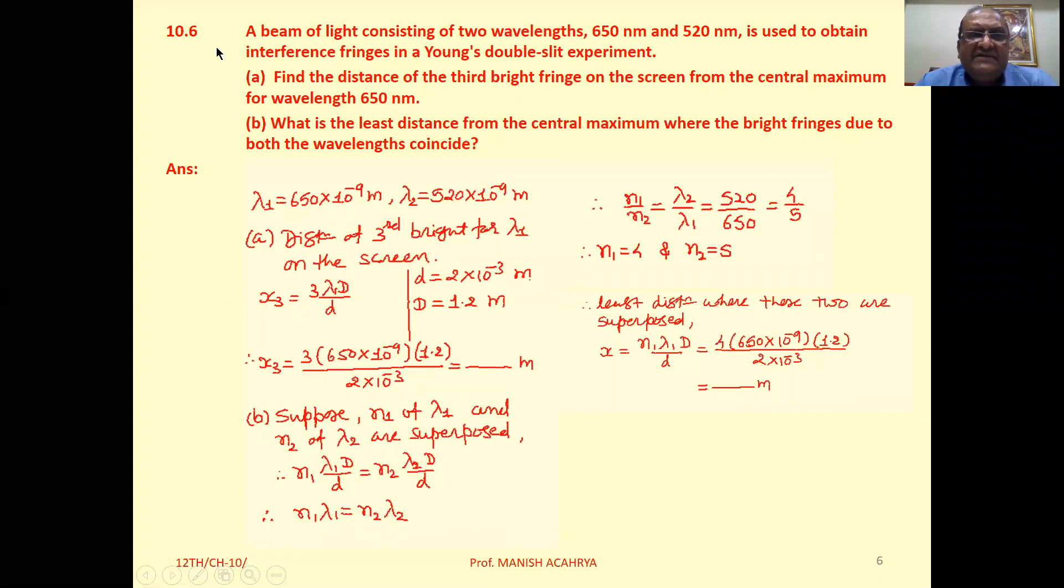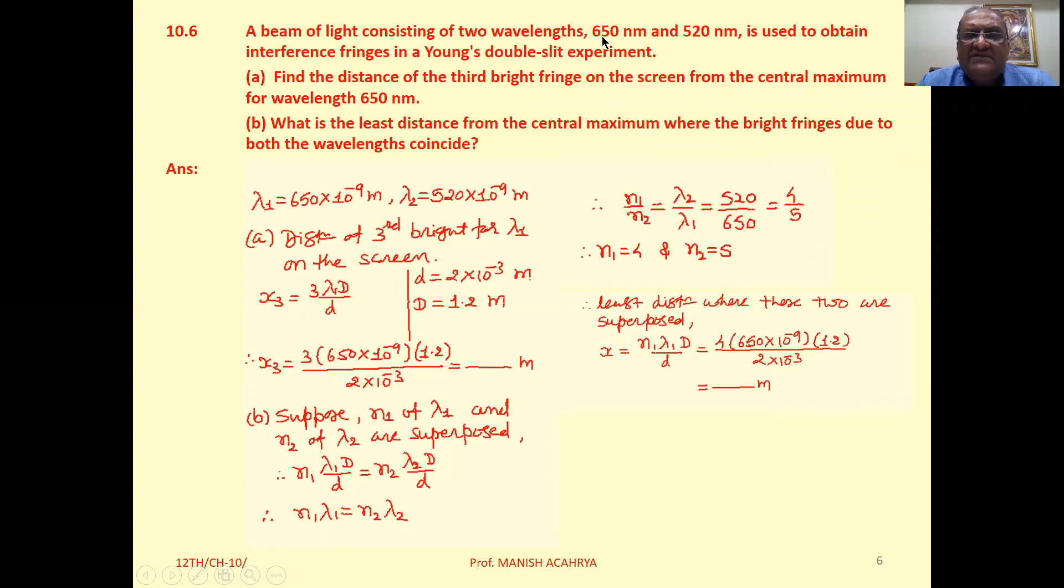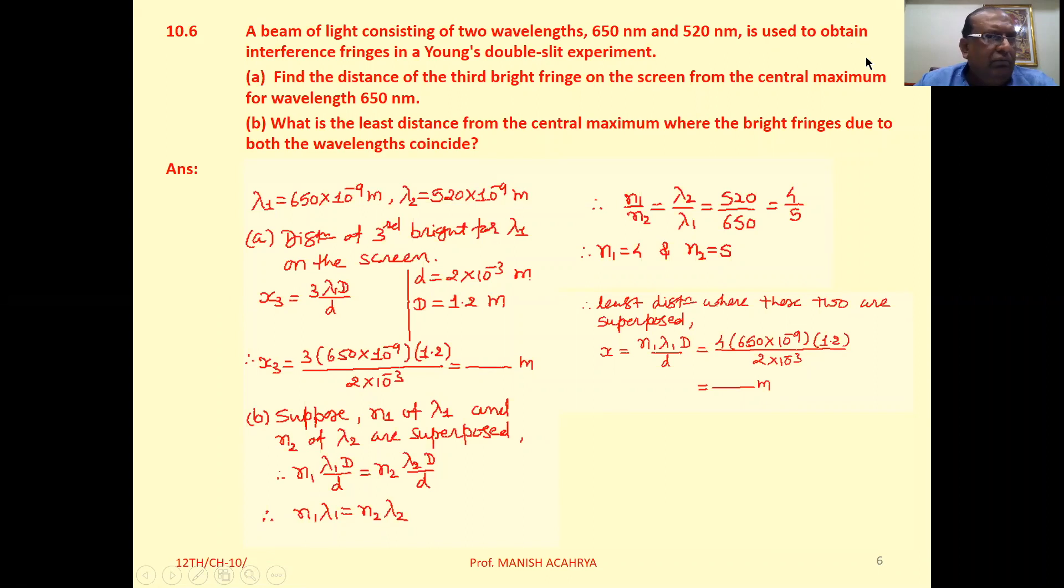Next, 10.6. A beam of light consisting of two wavelengths 650 nanometer and 520 nanometer is used to obtain interference fringes in a Young's double slit experiment.